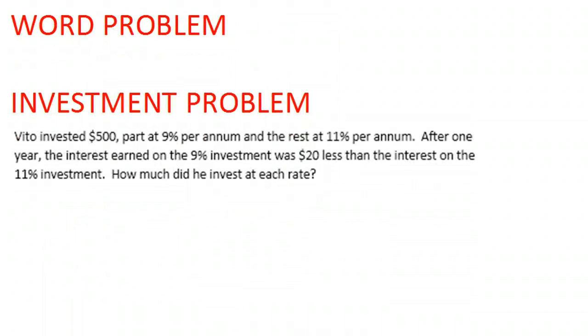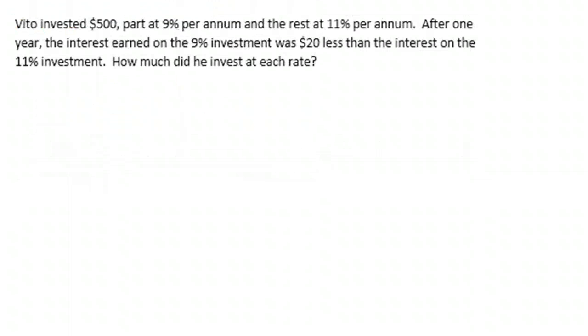So this is a pretty classic type of problem that we can look at. And what we need to do to start this problem is we need to make let statements to know what we're talking about. So in this case, Vito's invested two amounts. We're going to say let A represent 9% investment.